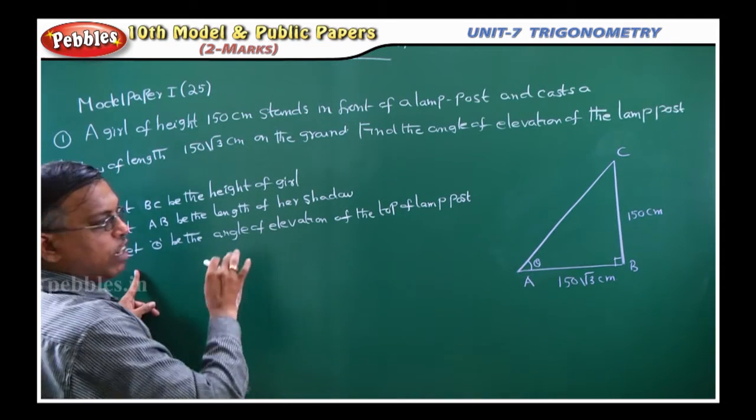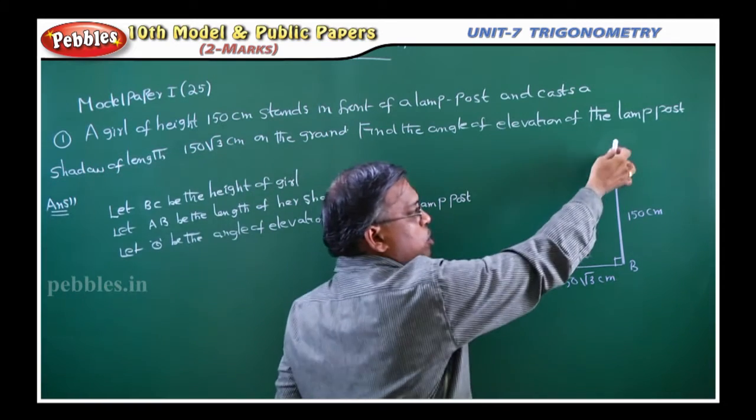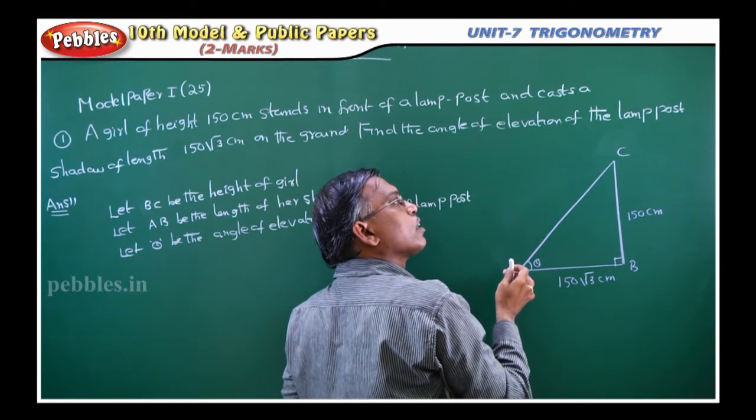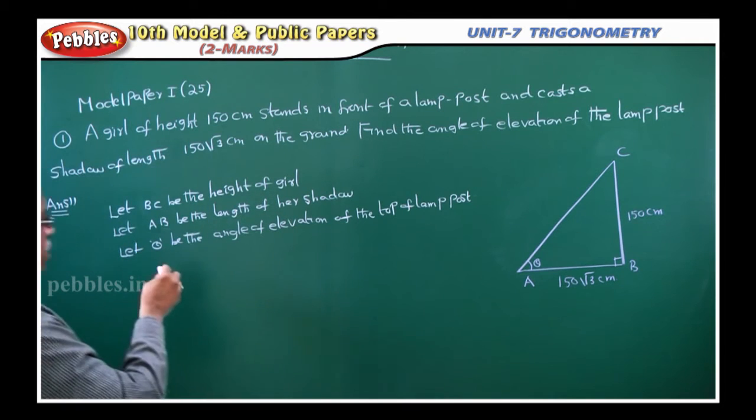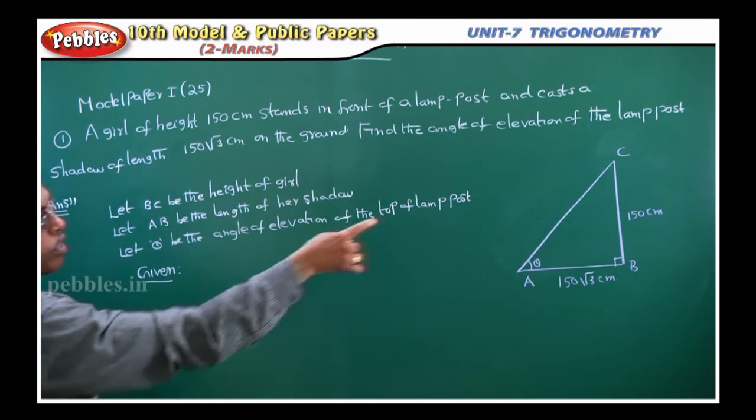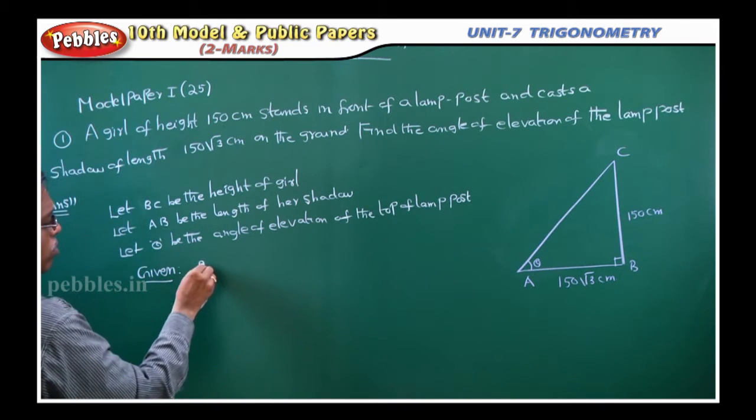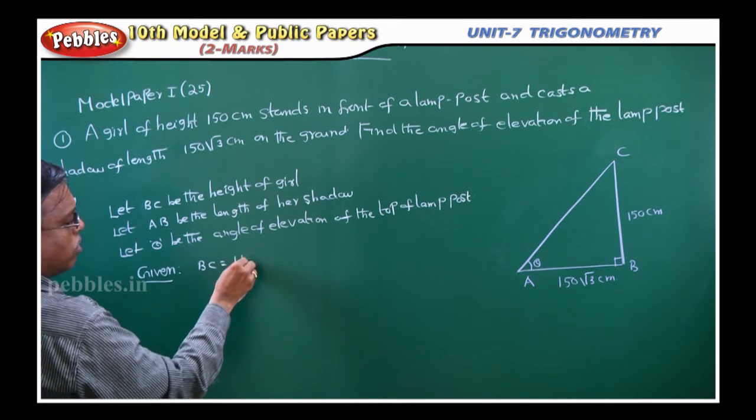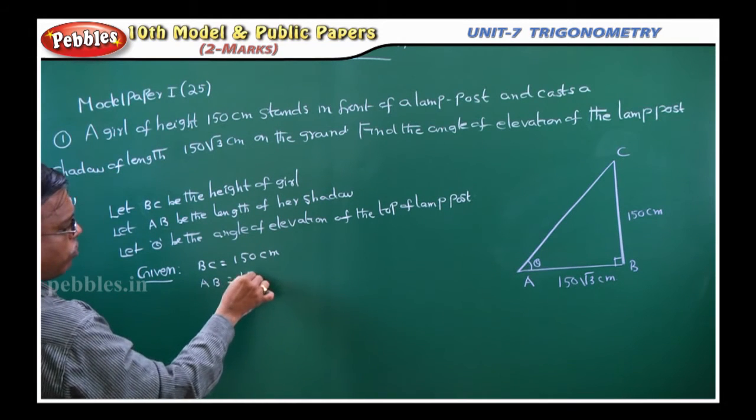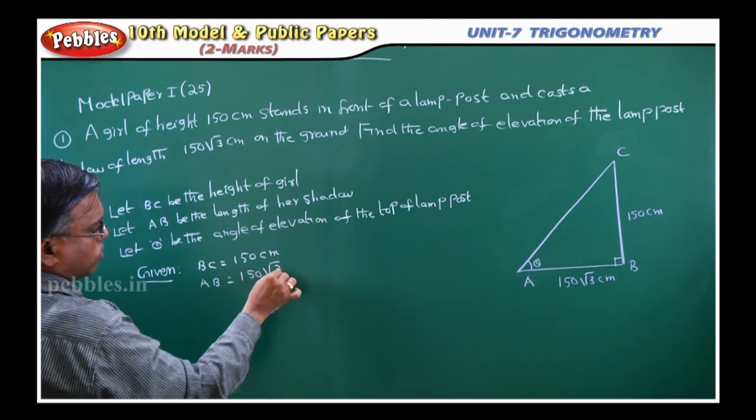Next, let theta be the angle of elevation of the top of the lamp post. Top means this point, top of the lamp post. This theta I am looking like this. So now, given data, what they given is BC is given. What is that? Girl's height, 150 centimeters. Next, AB is given, length of her shadow, 150 into root 3 centimeters.